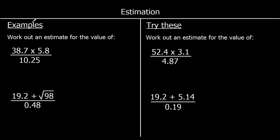The first calculation is 38.7 × 5.8 ÷ 10.25. For 38.7, the first significant figure is the 3 (worth 30). We look at the next digit: 8 is 5 or above, so we round up to 40. For 5.8, the first significant figure is 5, and 8 after it means it rounds up to 6. For 10.25, the first significant figure is 1 (worth 10), and the next digit is 0, so it stays as 10.